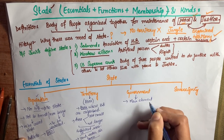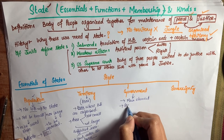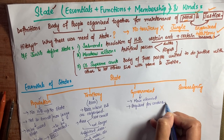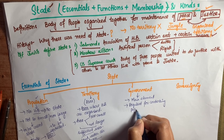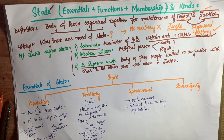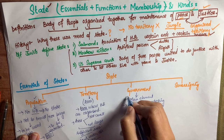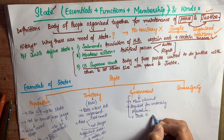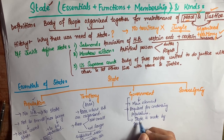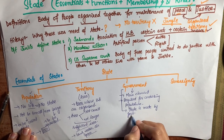Government is the main element of state. Government is required for controlling the population and area, because state is organized for peace and order. Rules and regulations are always made by the government, so we can say that the state is governed by the government.